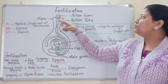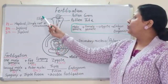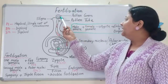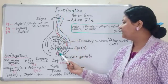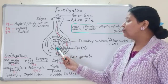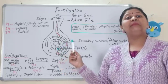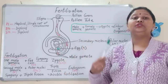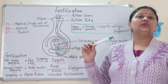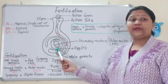When the pollen grain lands on the stigma of the flower, the vegetative cell helps in the development of the pollen tube. Through the pollen tube, two male gametes — shown here in red color — travel and enter inside the ovule through the micropylar end. The lower end is the micropylar end and the upper end is the chalazal end.